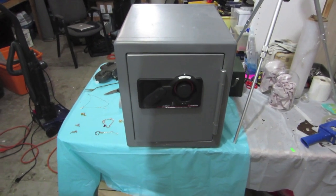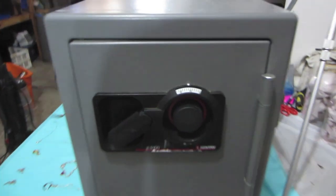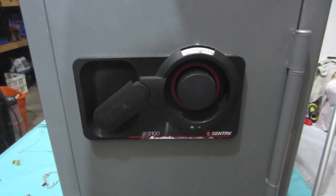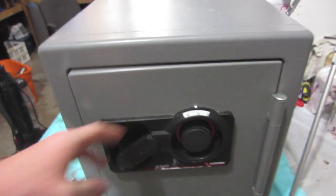Alright, in this video I'm going to show you how to figure out the code on a combination safe. This is a Sentry 3100, but it works on a lot of different safes. I've done it many, many times on many different safes.